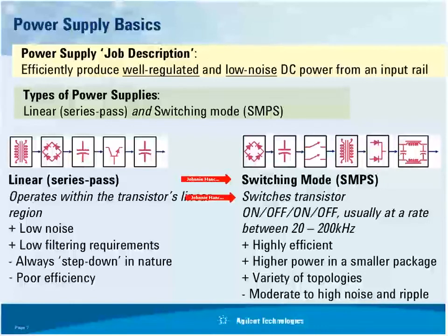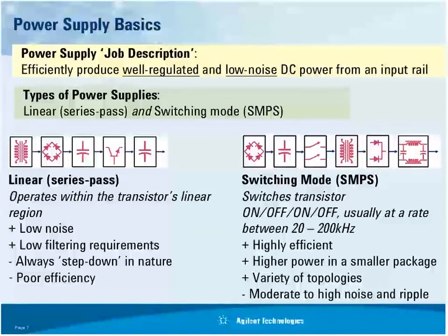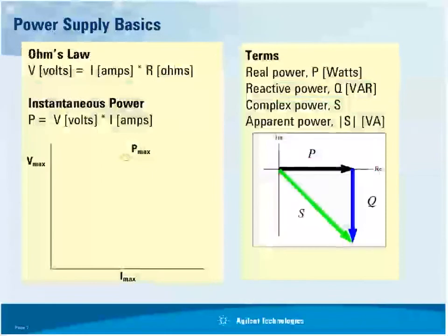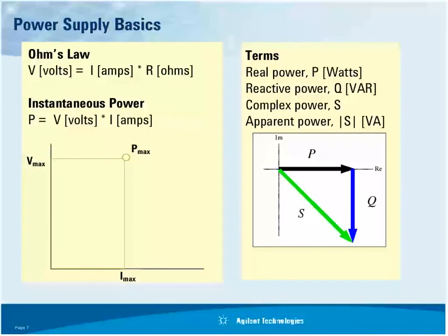We're not going to get into the theory of designing power supplies, but the basic theory is switching on and off — typically at 20 to 200 kilohertz. The advantages are they are very efficient and you can generate a lot of power in a small package with a variety of topologies. But the big negative is they can have moderate to high noise and output ripple, so you've got to make sure it still meets your requirements.